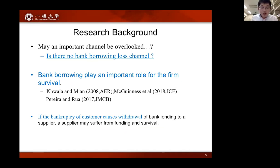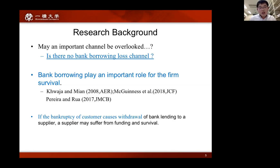Our research question is: is there no bank borrowing loss channel? Some prior studies document that bank borrowing plays a significant role in firm survival. So if the bankruptcy of a customer causes withdrawal of bank lending to a supplier, the supplier may suffer in terms of funding and survival. This means chain bankruptcy is not only a problem of the transaction network — demand loss and trade credit loss — but also a financial network problem, which has not been examined.